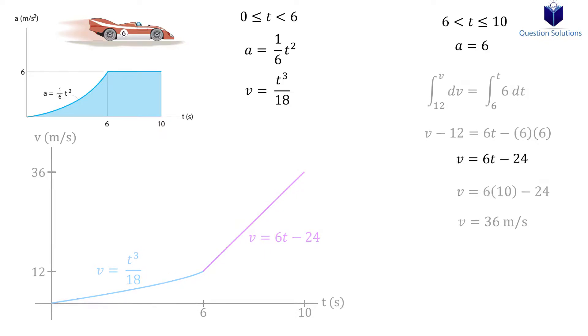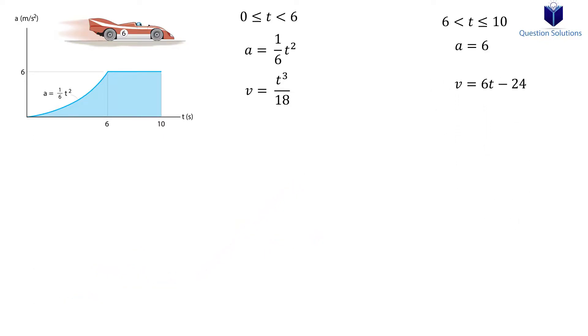Now we need to find the total distance the car traveled. To do so, we need a relationship between our velocity equations and displacement. We know that velocity is equal to the derivative of displacement with respect to time, which we can also write as ds is equal to v dt. As before, we need to integrate this equation to get the displacement.